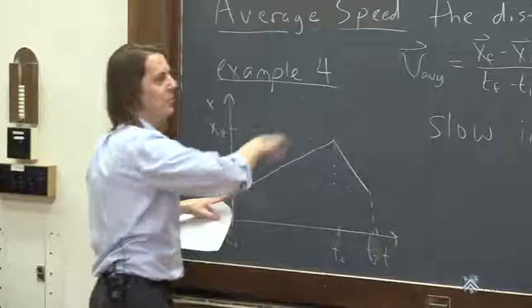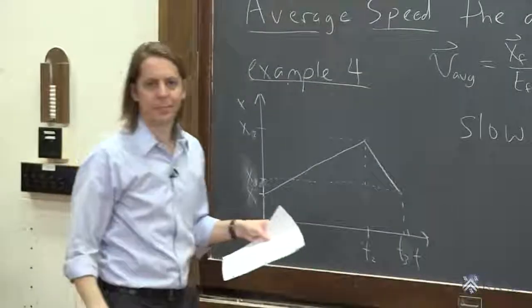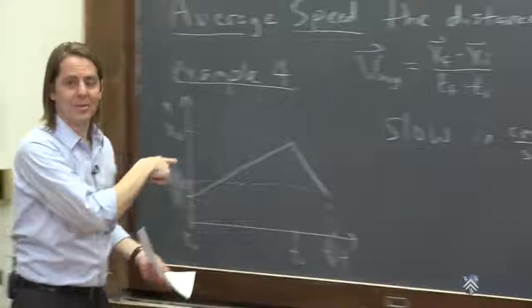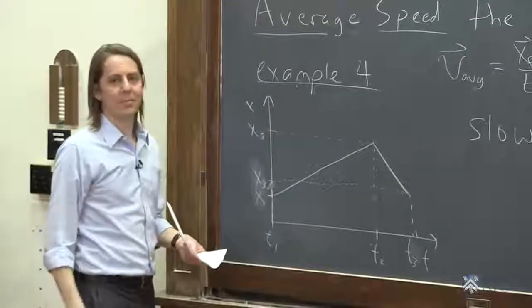Whereas this one has all these parts in it. That's why it's big. Okay? So speeds often are faster than average velocities because they don't have all the vector part in them.